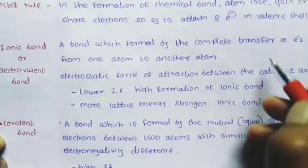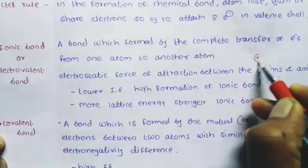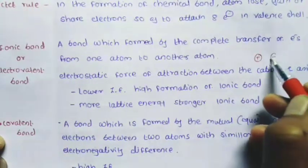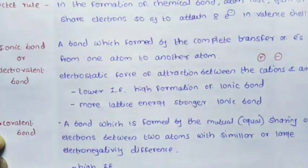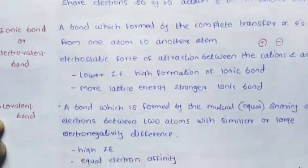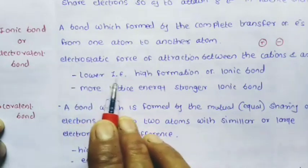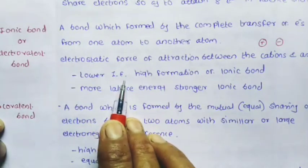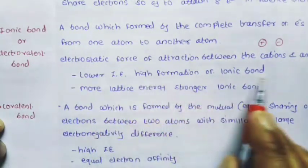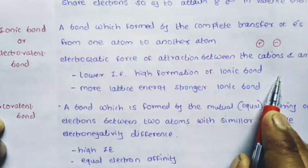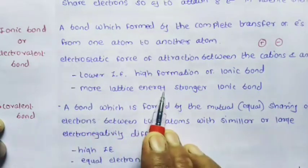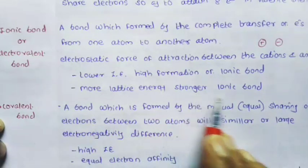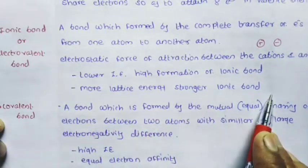The ionic bond forms cation and anion ions. Lower ionization energy leads to higher formation of ionic bond. More lattice energy means a stronger ionic bond.